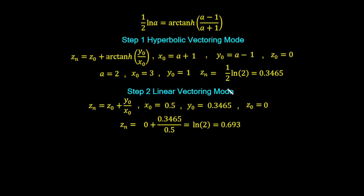We're going to work through a two-step process. Step 1: the hyperbolic vectoring mode gives zn equal to z0 plus arctanh(y0 upon x0), with x0 equal to a plus 1, y0 equal to a minus 1, and z0 equal to 0, giving the output a half ln a. If we choose a equal to 2 to find the natural log of 2, then x0 is 3, y0 is 1, and this gives us the output a half ln 2, which is 0.3465.